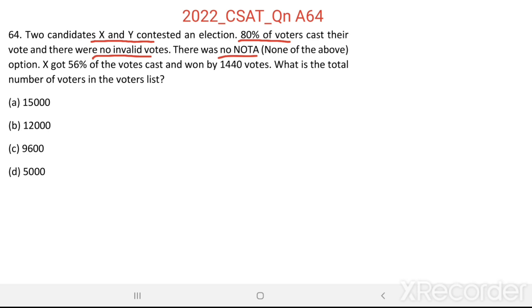That means each vote goes to either the account of X or to the account of Y. X got 56% of the votes and won by 1440 votes. What is the total number of voters in the voters list?